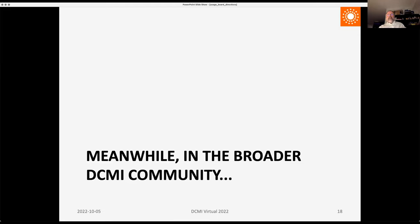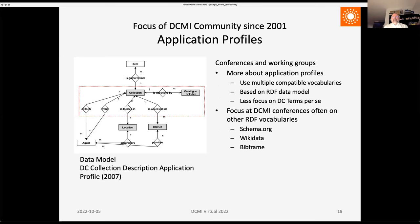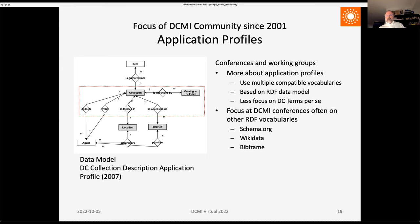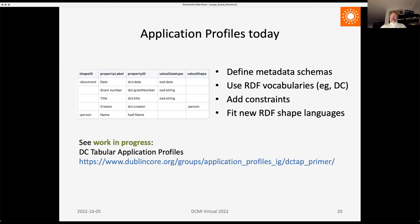After 2001, the attention of the DCMI community turned more to the notion of an application profile. At conferences and in working groups, there was a lot of discussion of application profiles, and also a focus on other vocabularies that could be used in application profiles — schema.org, Wikidata, BibFrame — with important tutorials and sessions and panels about all of these. DCMI-style application profiles today define metadata schemas using RDF or RDF-ish vocabularies, add constraints, and fit very well with important new RDF shape languages such as ShEx and SHACL.